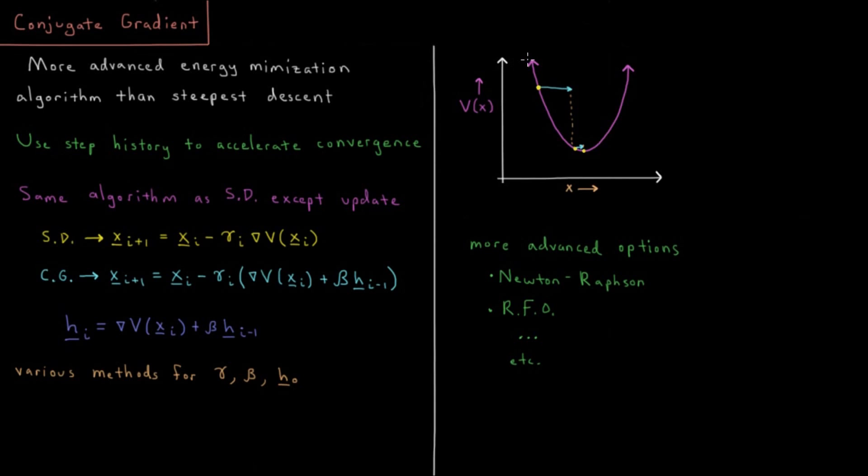I mentioned that one of the simplest algorithms for doing that is what's called steepest descent where at each step I step in the direction of the gradient and then eventually settle down towards a local minimum structure. I mentioned that that algorithm is fairly crude and simple and that most modern programs use more advanced procedures.